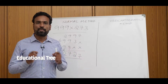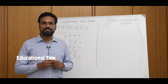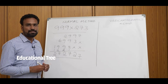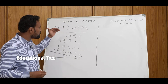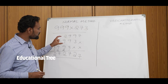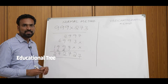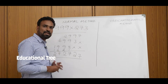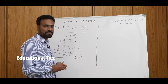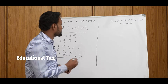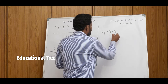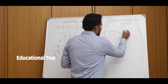Let's do the first problem with multiplication. 999 into 273. This is the main school method of multiplication — done in steps. In Vedic Mathematics, we will get the answer in a single line. The answer for 999 into 273 is: